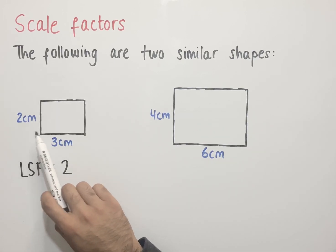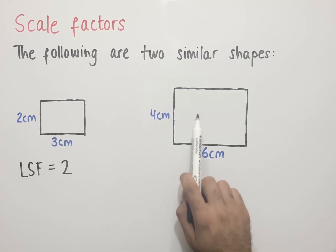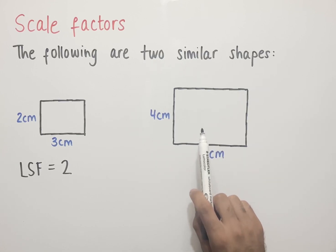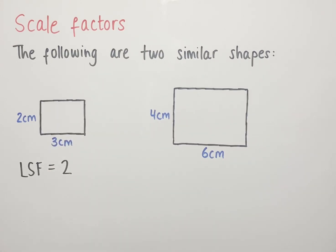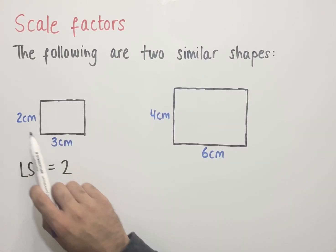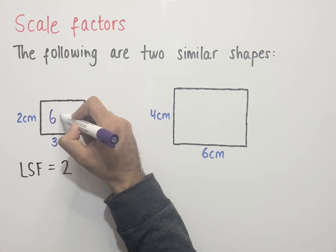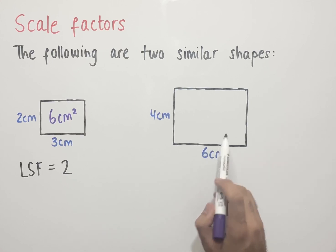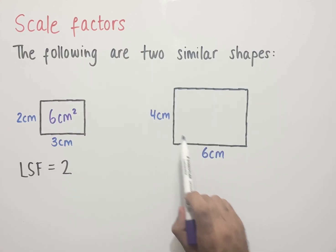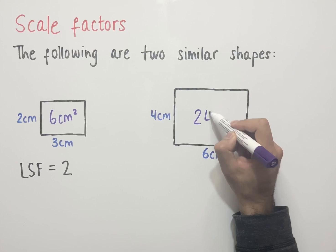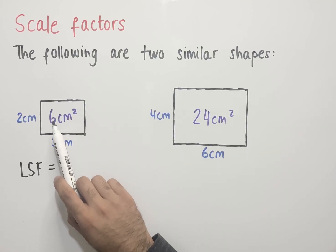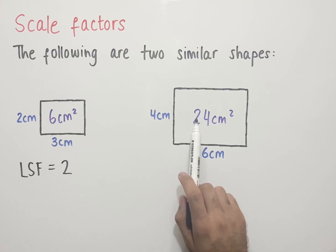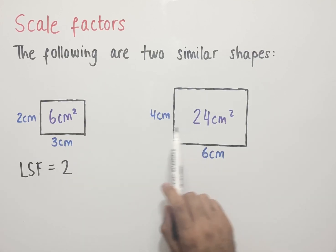If we multiply each of the lengths of the smaller rectangle by 2, we end up with the lengths of the bigger rectangle, and if we divide each of the lengths of the bigger rectangle by 2, we end up with the lengths of the smaller rectangle. The area of the small rectangle is 2 times 3, which is 6 centimeters squared. The area of the larger rectangle is 4 times 6, which equals 24 centimeters squared. Comparing the areas, multiplying 6 by 4 gives us 24, and dividing 24 by 4 gives us 6.